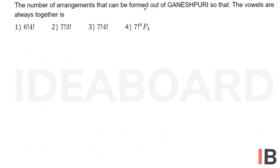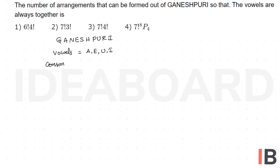The number of arrangements that can be formed out of GANESH PURI so that the vowels always come together. The word GANESH PURI is G, A, N, E, S, H, P, U, R, I. Vowels are A, E, U, I and consonants are G, N, S, H, P, R. Given the condition that vowels come together, the four vowels are considered as one unit.